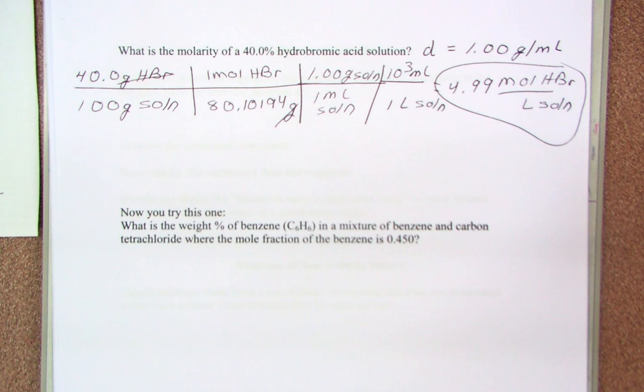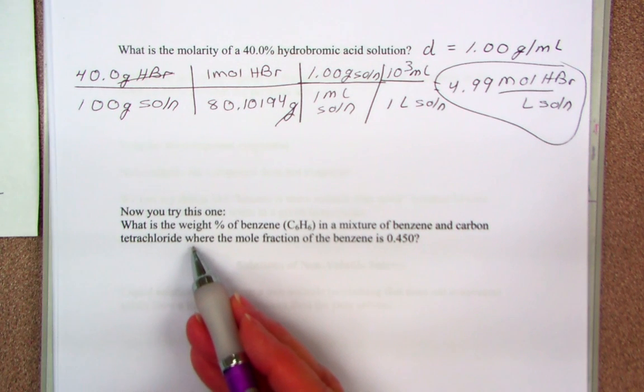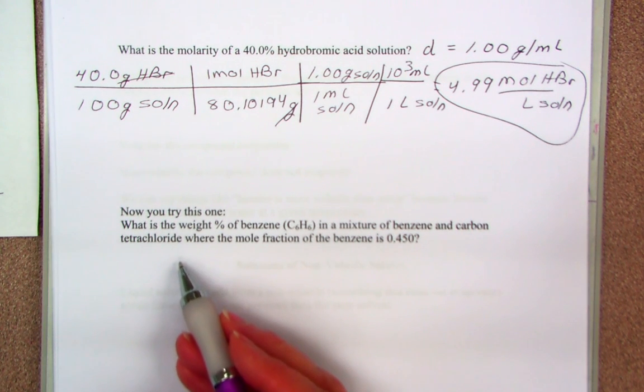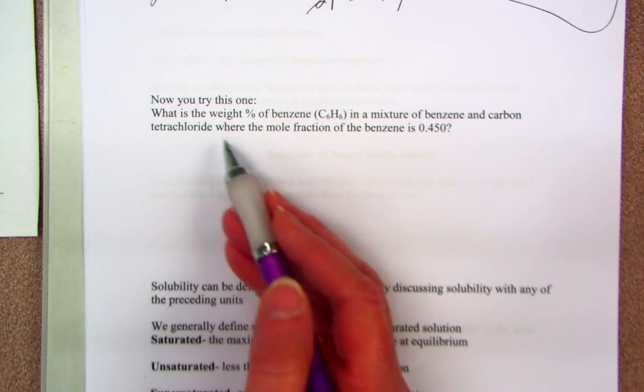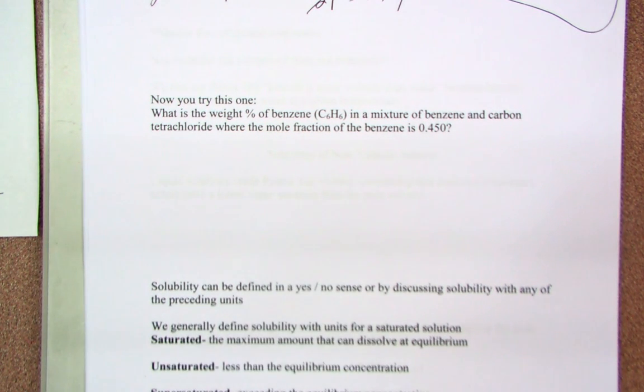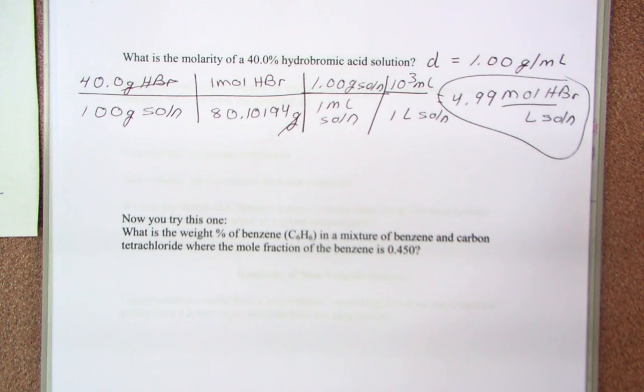This one's a little bit easier because you don't have to do any addition and subtraction. Now go ahead and do this next one, which is completely different. You're going to have to think your way through because you're going from weight percent into mole fraction—different units, different path.